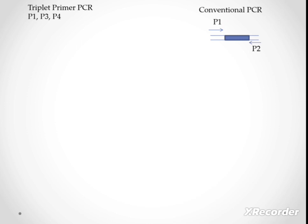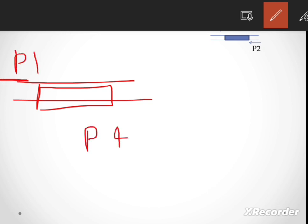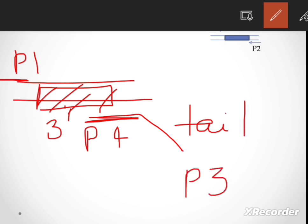The P1 primer binds outside the gene of interest. The P4 primer has two portions: one is the three-prime end portion which is complementary to the gene of interest, and a tail portion which is complementary to the P3 primer. P3 has no binding site in the gene of interest or the whole genome. So P3 is designed in such a way that it only binds to the tail portion of the P4 primer, and it will be able to form a primer pair with P1 only after P4 is incorporated in the newly amplified fragment. Let us understand in detail.